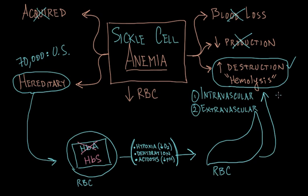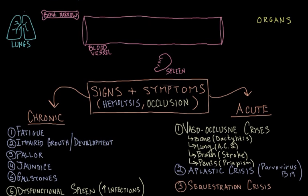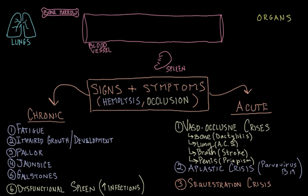Almost all of the manifestations of sickle cell anemia can be explained by two principles: hemolysis and occlusion — occlusion of blood vessels. Let's start with hemolysis and talk about how it accounts for a lot of the chronic manifestations of the disease.